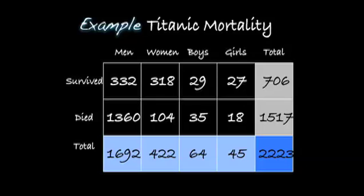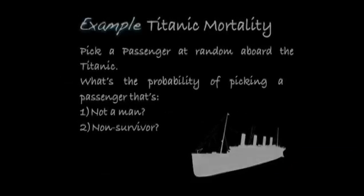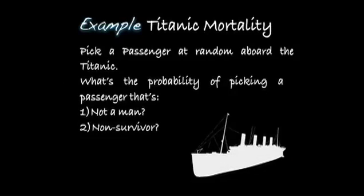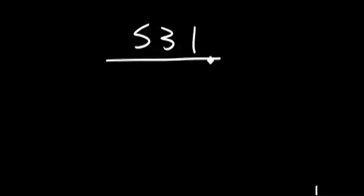This is a Titanic mortality table that we'll be using to compute probabilities. For example, if you pick a passenger at random aboard the Titanic, what's the probability of picking a passenger that is: question 1, not a man? Question 2, a non-survivor? Aboard the Titanic, there are 531 non-men out of the 2,223 passengers.